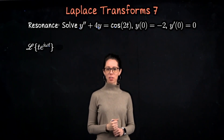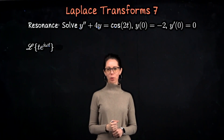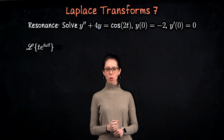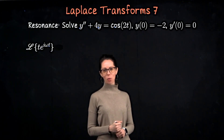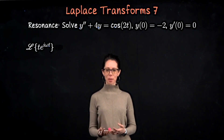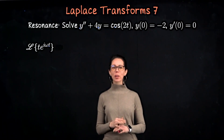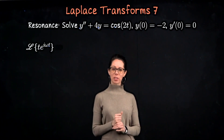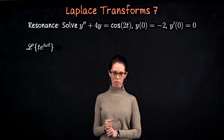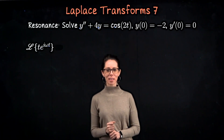The goal of this video is to solve one second-order differential equation. We would like to find the function y satisfying y double prime plus four y equals cosine of two t, with some initial conditions. We're going to dedicate a whole video to just this example because if you start to solve it using traditional techniques, you'll notice that resonance is happening.